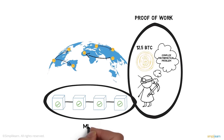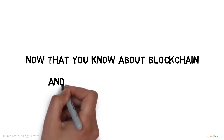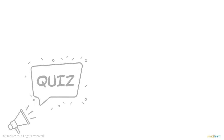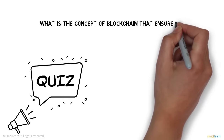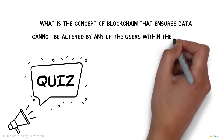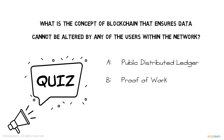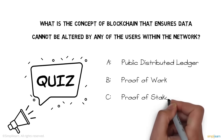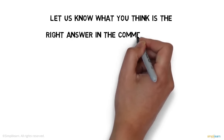The process of solving the complex mathematical problem is called proof of work, and the process of adding a block to the blockchain is called mining. With this, Phil and Jack's wallets are updated, just like every person in the network who has completed a transaction. Quick quiz: what concept of blockchain ensures data cannot be altered by any user? A) Public distributed ledger, B) Proof of work, C) Proof of stake, D) Hash encryption. Let us know in the comments!